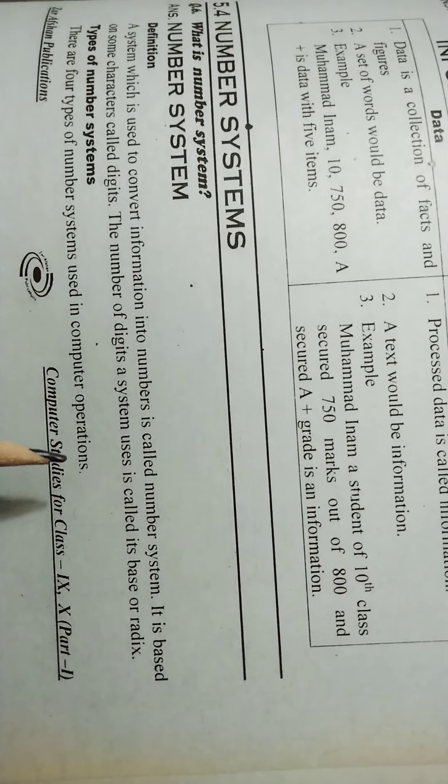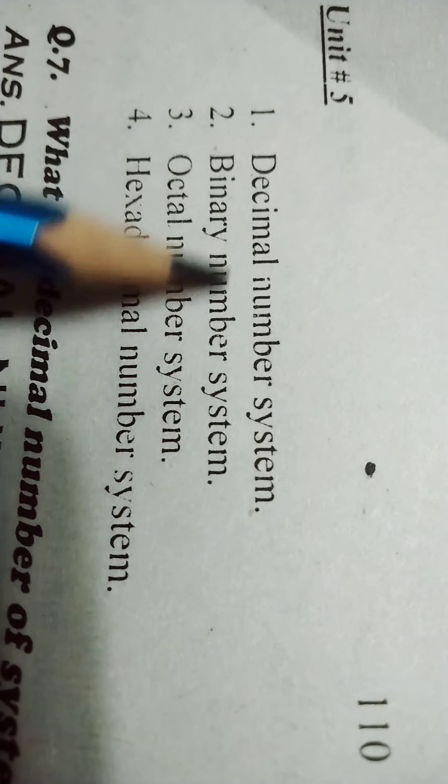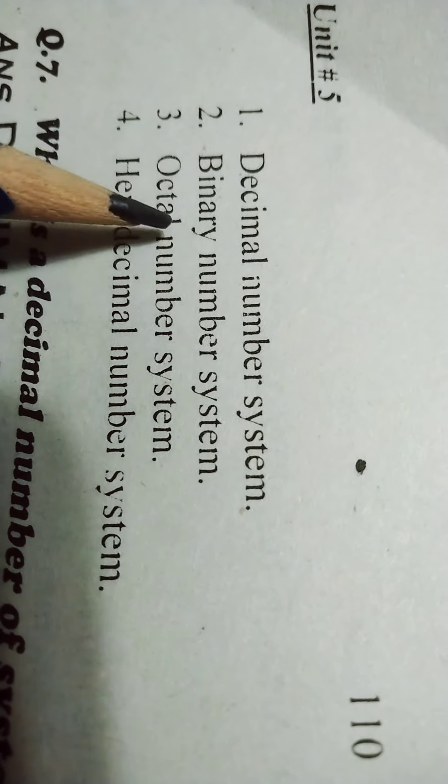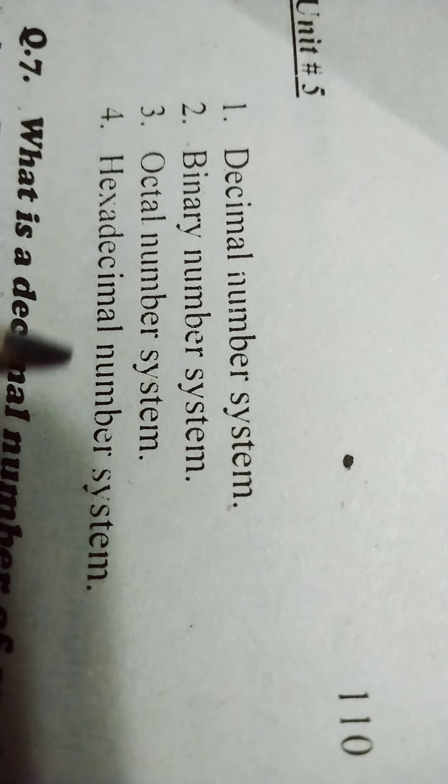There are four types of number systems used in computer operations: decimal number system, binary number system, octal number system, and hexadecimal number system.